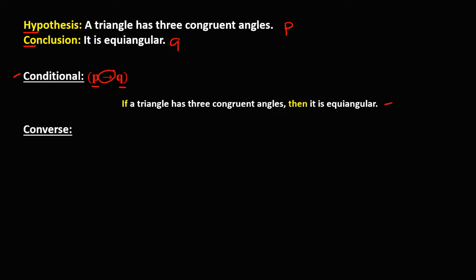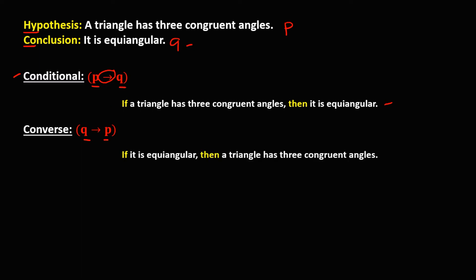For the converse, that's Q implies P. So we have Q: if it is equiangular, then P: a triangle has three congruent angles. So this is now the converse of this conditional statement.